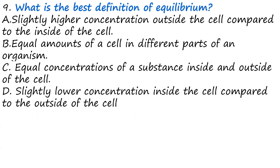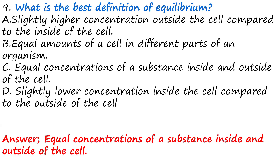Question nine: What is the basic definition of equilibrium? A, slightly higher concentration outside the cell compared to inside. B, equal amount of cells in different parts of an organism. C, equal concentration of a substance inside and outside of the cell. D, slightly lower concentration inside the cell compared to outside. The answer is C — equilibrium is achieved when the concentration inside and outside the cell are equal. If they are not equal, transportation must occur to restore equilibrium.